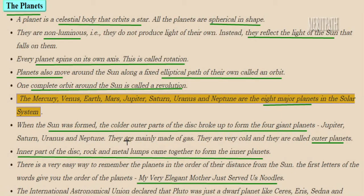There are 8 major planets in the solar system. Earlier there were 9, but Pluto was removed and now only 8 major planets remain. The names of the 8 major planets are Mercury, Venus, Earth, Mars, Jupiter, Saturn, Uranus, and Neptune. Earlier there was Pluto, but now it is removed.